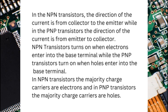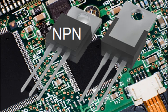NPN transistors turn on when electrons enter into the base terminal, while PNP transistors turn on when holes enter into the base terminal. In NPN transistors, the majority charge carriers are electrons, and in PNP transistors, the majority charge carriers are holes. NPN transistors are the most widely used transistor types in the industry.